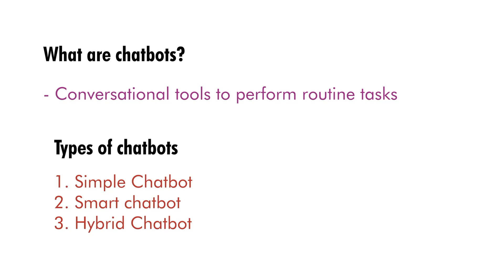When a customer interacts with the chatbot to order a pizza, the flow of conversation is set just like an operator asking for your order over the phone. The chatbot poses questions starting from the size of the pizza, the crust, the toppings, the amount of cheese, and then requests the address and payment method. These steps are logical and only require the customer to click through and complete their order.